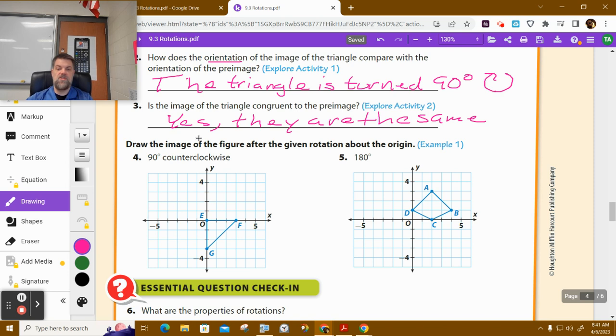Draw the image of the figure below given the rotation. So we're going to do 90 degrees counterclockwise. Counterclockwise goes this way in the opposite direction of a clock. E will still be E. F is one, two, three units away. So it would be one, two, three. This is F prime.